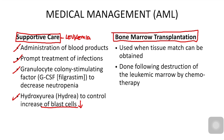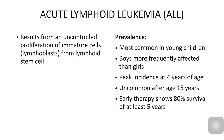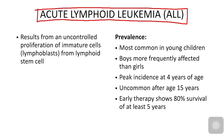Bone marrow transplantation is used when the bone marrow's genetics are unmatched with the system and must be replaced with compatible marrow. It is done only after destruction of leukemic marrow by chemotherapy, because performing it while cancer cells remain could cause the cancer to return. Transplantation is completed after full chemotherapy cycles.